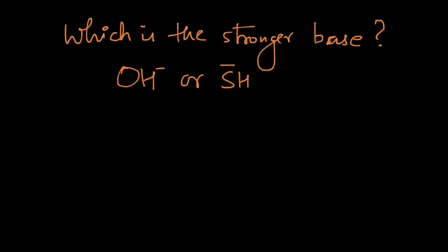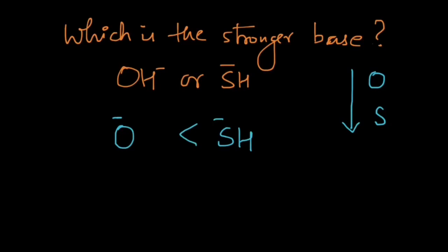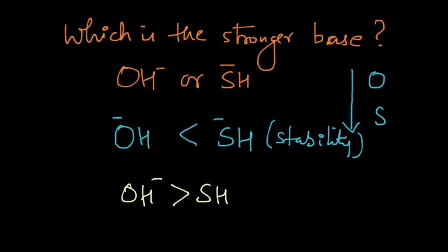Let's take a look at this question: which is the stronger base, OH⁻ or SH⁻? The negative charge is on O in OH⁻ and on S in SH⁻, and these two belong to the same group. As we go down the group, negative charge becomes more stable, so SH⁻ is more stable than OH⁻. Therefore, the order of basicity is the reverse: OH⁻ is more basic than SH⁻.